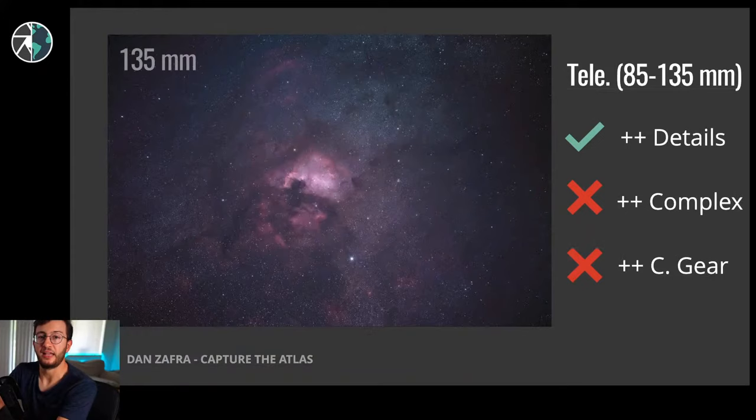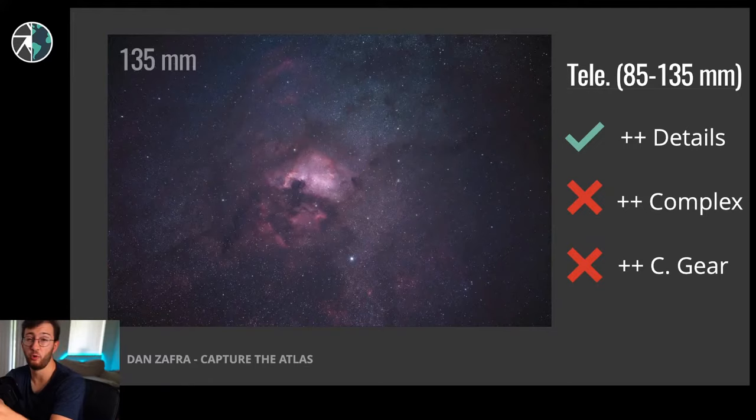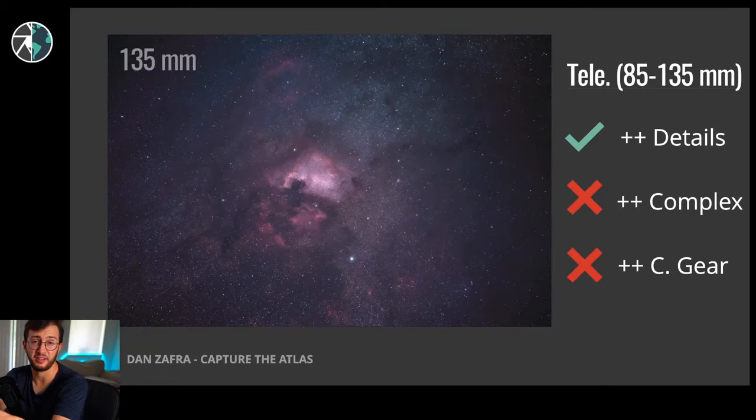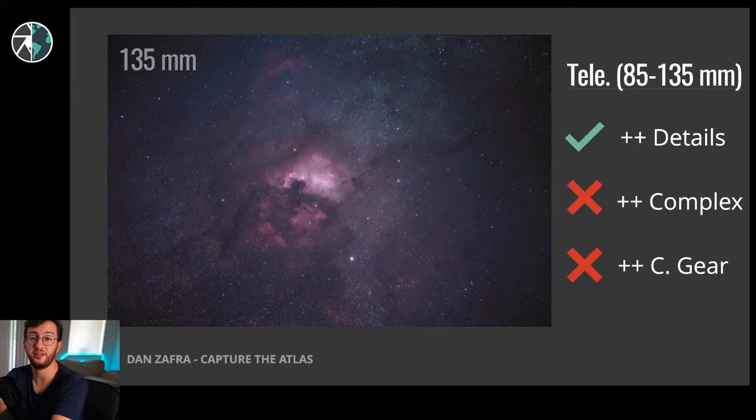Lastly, we have short telephoto lenses - anything like 85mm or 135mm. This is almost another genre because we're getting into more deep sky astrophotography. Here you can capture more and more details, but it's going to be much more complex, and you'll need more camera gear like counterweights, more accessories, L brackets, and more things. Just bear in mind that if you have a standard tracker, this is something you can do as well.